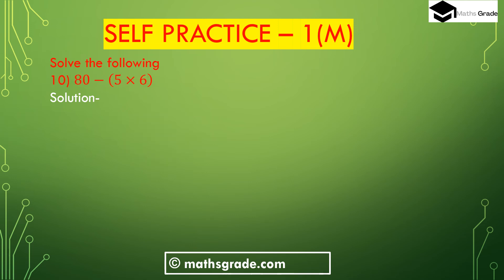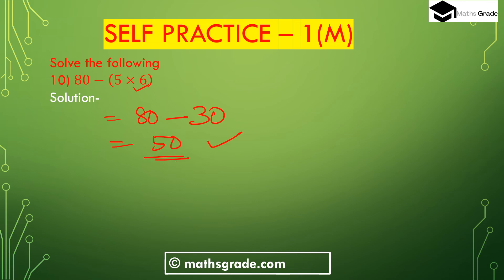Now question number 10: 80 minus (5 multiplied with 6), where 5 multiplied with 6 is inside the bracket. First we have to calculate the multiplication inside the bracket: 5 multiplied with 6 is 30. Then 80 minus 30 is 50. So 50 is the answer. So 80 minus (5 multiplied with 6) is 50.